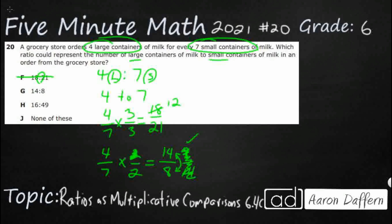So now we've got to try to figure out 4 times what makes 14? Nothing. 7 times what makes 8? Nothing. So that is just a big fat no.